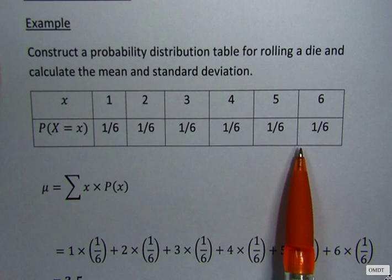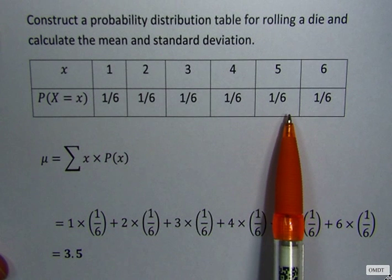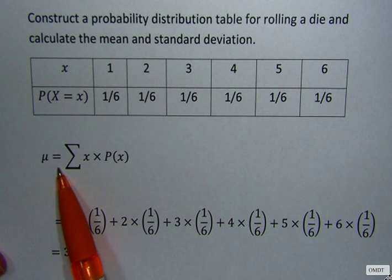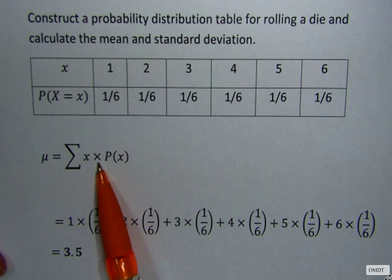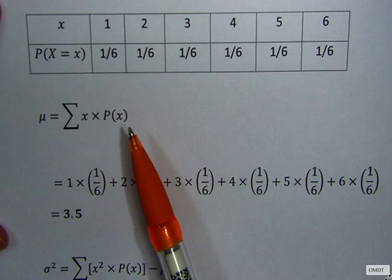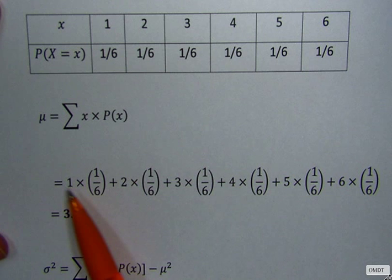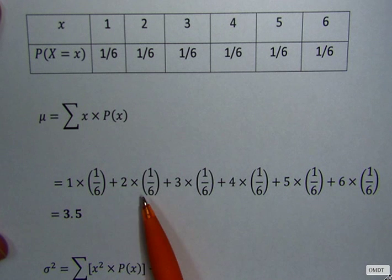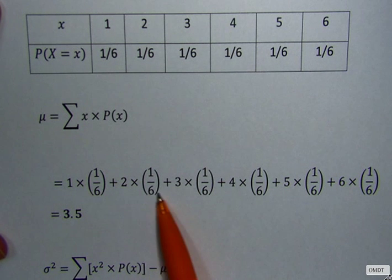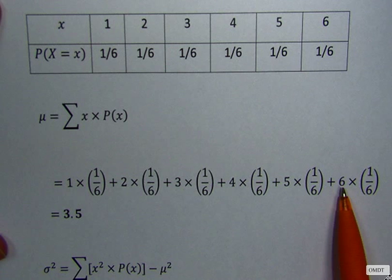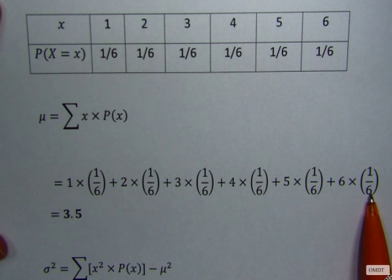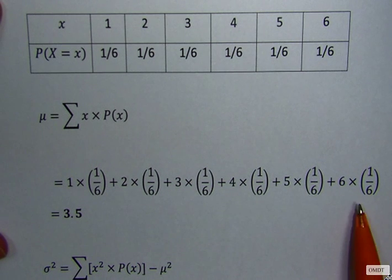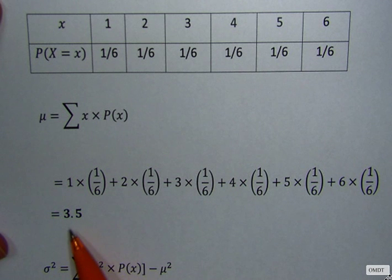Next, we have to calculate the mean. The formula for calculating the mean is sum of x times probability. So from our table, the first x is 1. So we have 1 times probability of 1 is 1 over 6 plus 2 times 1 over 6, and this continues to the last one, 6 times 1 over 6. If we simplify this using our calculator, we get our mean is 3.5.